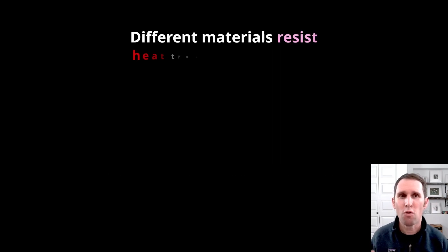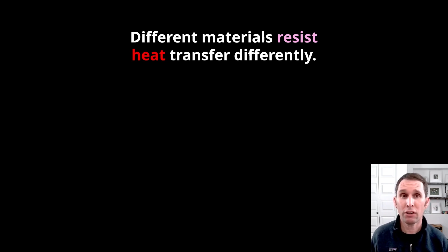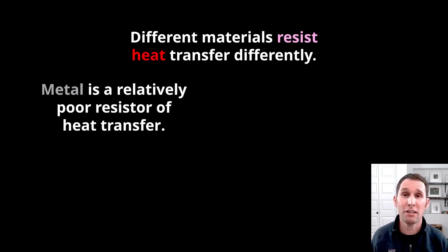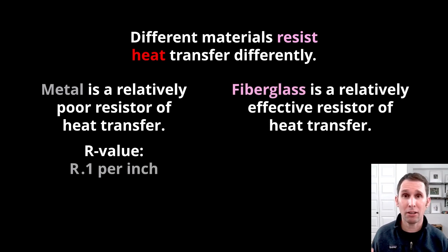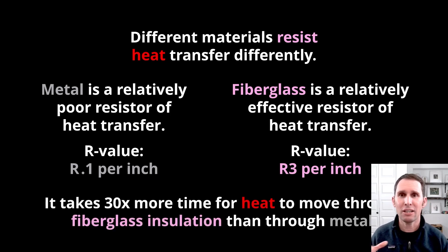So, different materials resist heat transfer differently. Metal, for example, is a very poor resistor of heat transfer. It's very good at conducting heat transfer or moving heat. It's got a very low R-value of about 0.1 or one-tenth. Fiberglass, on the other hand, is a relatively effective resistor of heat transfer. It's got a higher R-value of R3 per inch. So, it takes actually 30 times more time for heat to move through fiberglass insulation than it does through metal.